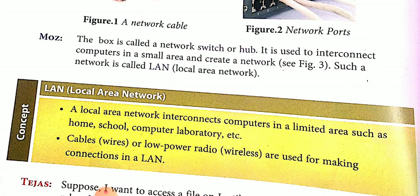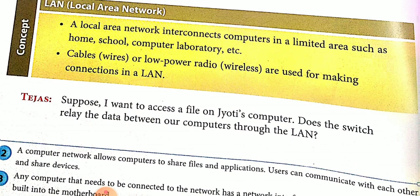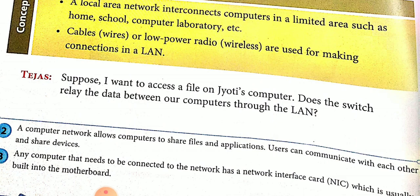For example, if you open your LAN connection or Wi-Fi connection at your school, it is not accessible because that connection belongs to your home. But if we access our school Wi-Fi LAN connection, it is accessible. Cables or low-power radio signals are used for making a connection in a LAN. A computer network allows computers to share files and applications. Users can communicate with each other and share devices.